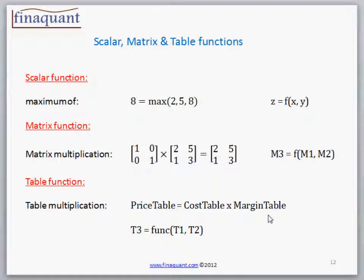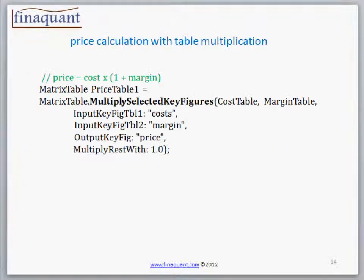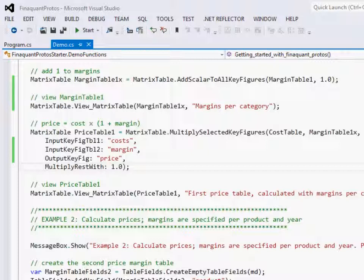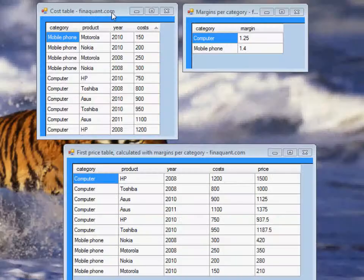This is not an ordinary multiplication. This is a table function, namely table multiplication, or more precisely, multiplication of selected key figures. I will show you now how this table multiplication works with finaquant protos.